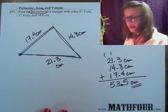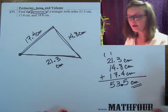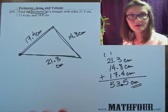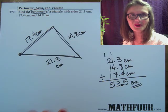And then don't forget to answer with units. So we have 53.5 centimeters is the perimeter of the triangle. I'm Bon Crowder with Math4.com reminding you that math is not a four-letter word.